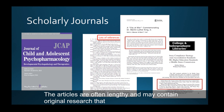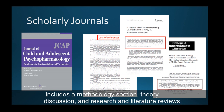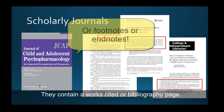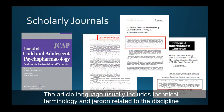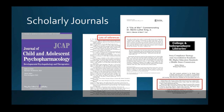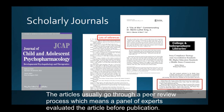The articles are often lengthy and may contain original research that includes a methodology section, theory discussion, and research and literature reviews. They contain a works cited or bibliography page. The article language usually includes technical terminology and jargon related to the discipline. They're published by professional or scholarly organizations, research institutes, or academic presses. The articles usually go through a peer review process, which means a panel of experts evaluated the article before publication.